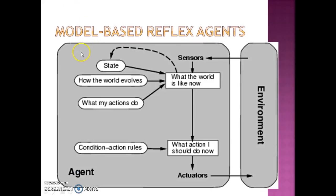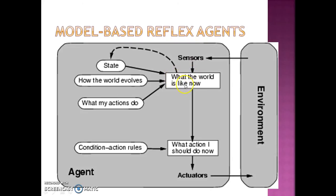Given the schematic diagram of model-based reflex agents, there is an environment wherein the agent is supposed to work. The environment is sensed through sensors, giving partial information on what the world is like right now, but that may not be enough. So we use part of that information to maintain an internal state, combined with model information — how the world evolves and what the agent's actions do. All three together plus the sensor information give us a picture of what the world is like right now.